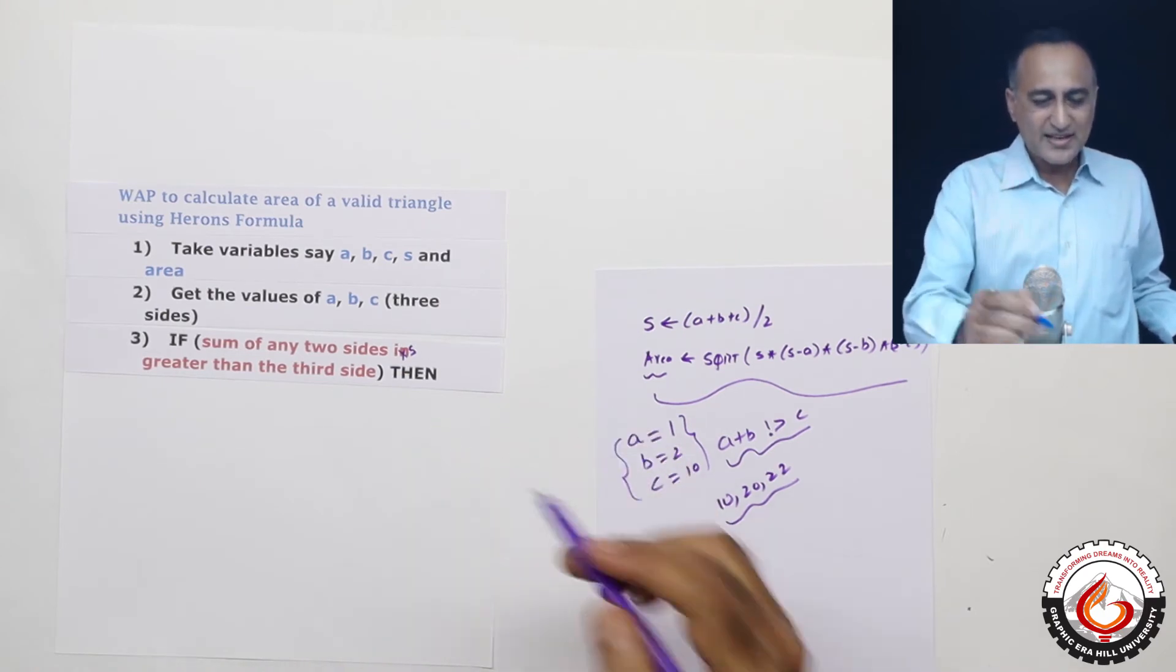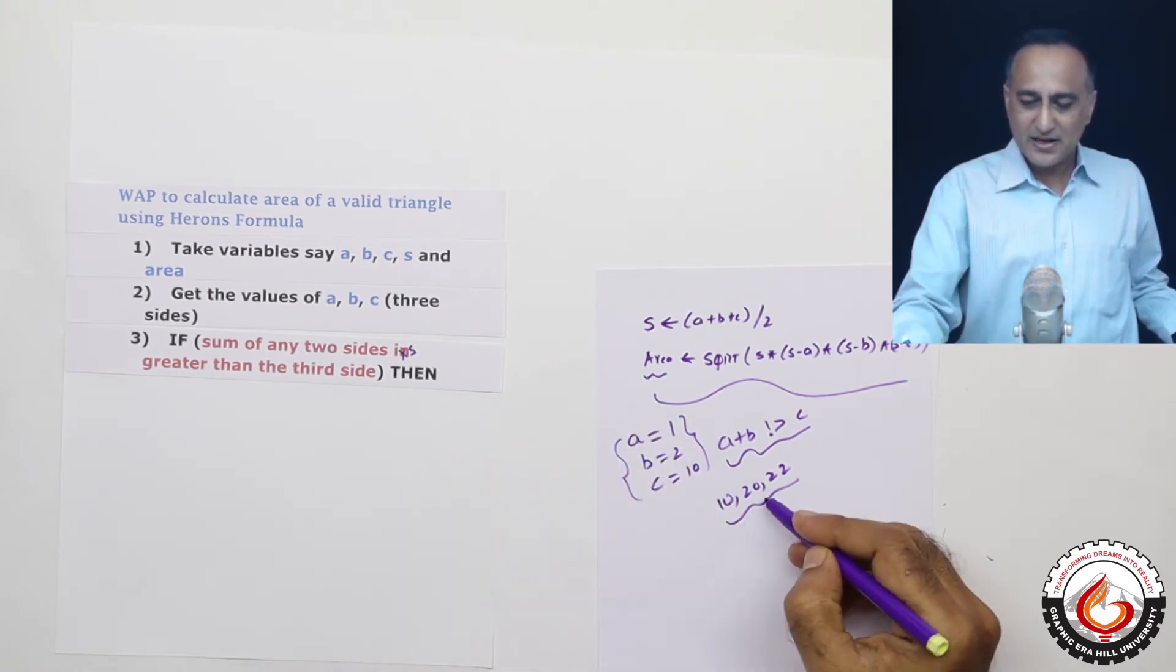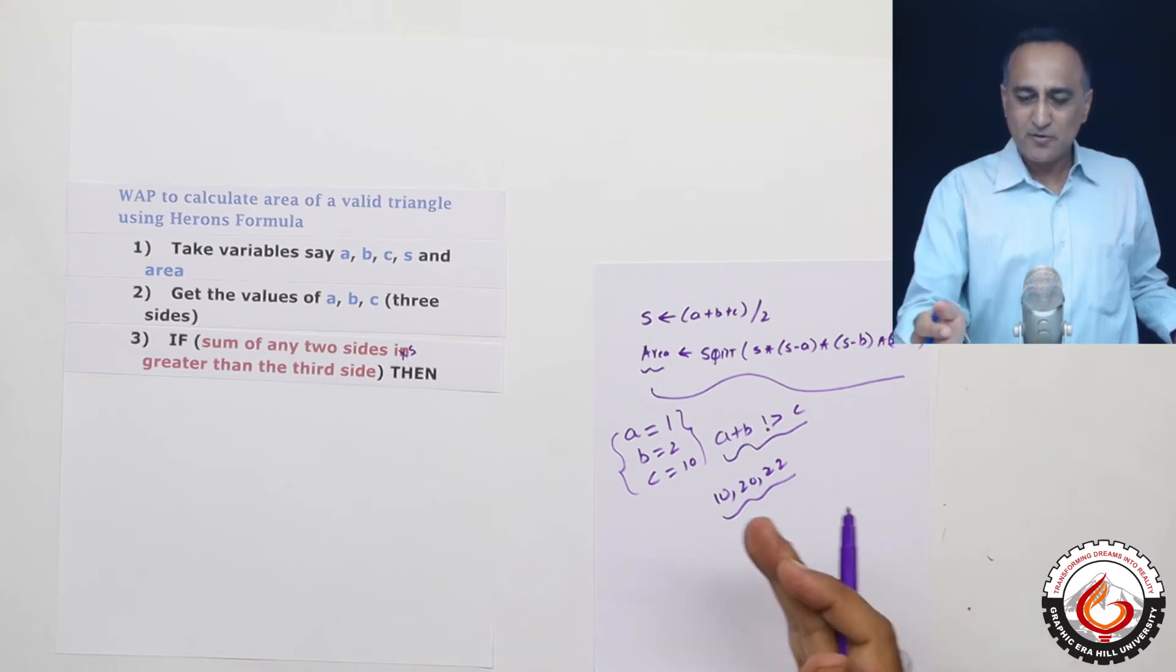So assuming he has entered sides like this 10, 20 and 22 here, the sum of any two sides is greater than the third side.